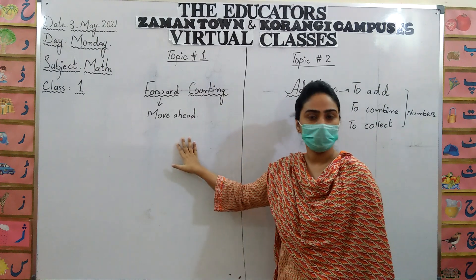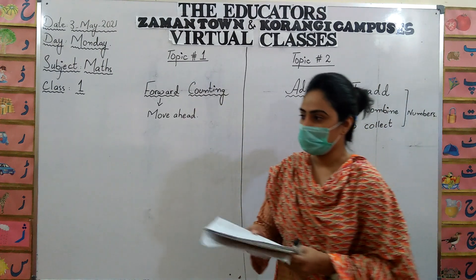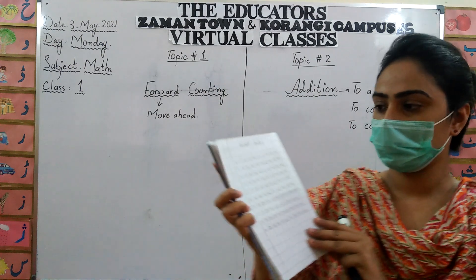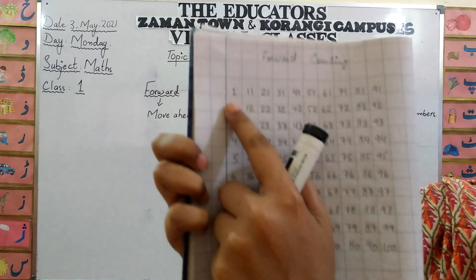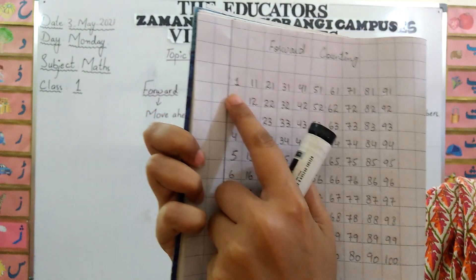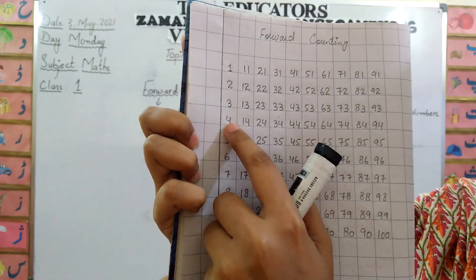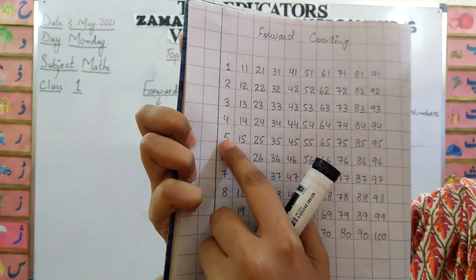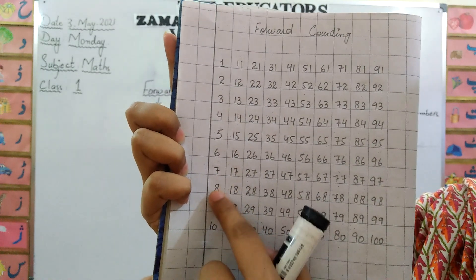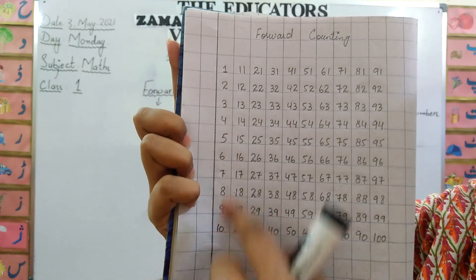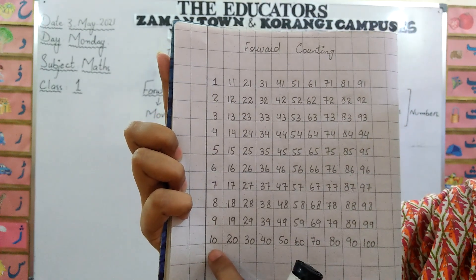You all know about forward counting. Like: one, two, three, four, five, six, seven, eight, nine, ten. These all are forward counting.